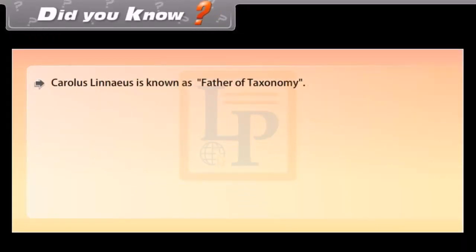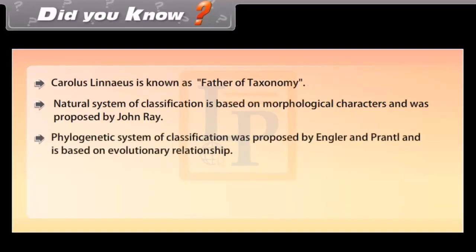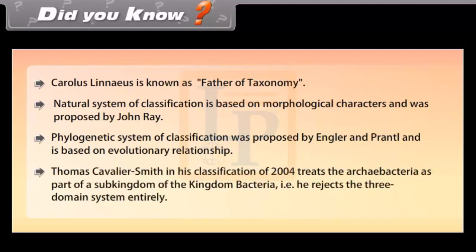Did you know? Carolus Linnaeus is known as the father of taxonomy. The natural system of classification is based on morphological characters and was proposed by John Ray. The phylogenetic system of classification was proposed by Engler and Prantl and is based on evolutionary relationships. Thomas Cavalier-Smith in his 2004 classification treats Archaeobacteria as part of a sub-kingdom of the kingdom Bacteria, rejecting the three-domain system entirely.